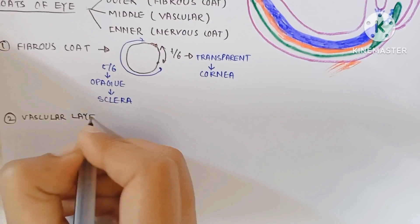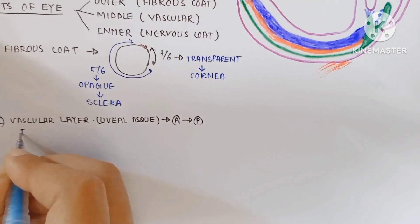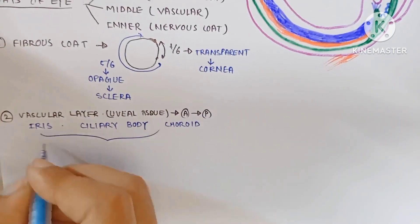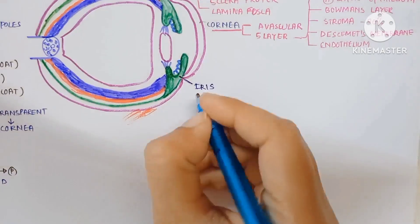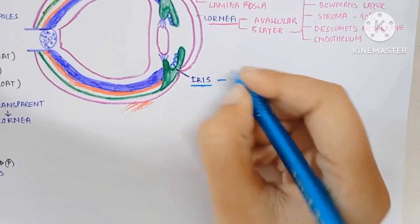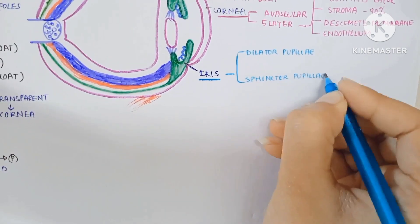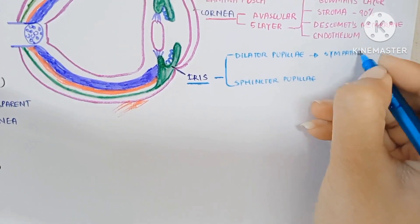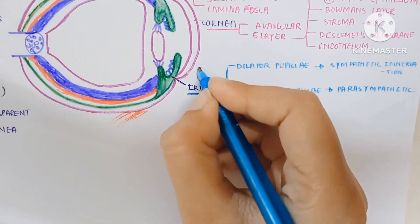The second is the vascular coat which is uveal tissue. From anterior to posterior: iris, ciliary body, and choroid. These layers supply nutrition to the eyeball. The iris has two muscles: dilator pupillae and sphincter pupillae. The dilator pupillae is innervated by sympathetic innervation, the sphincter pupillae by parasympathetic.